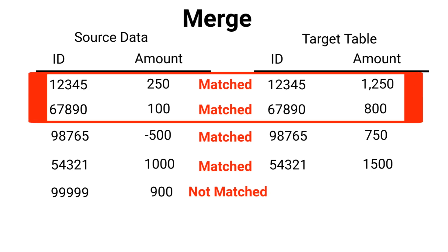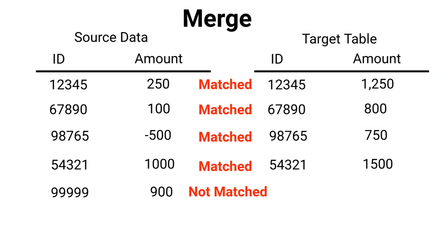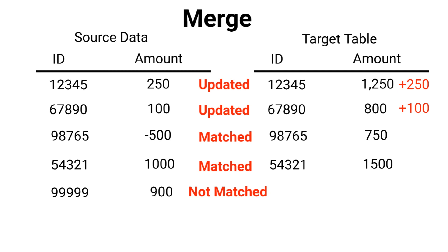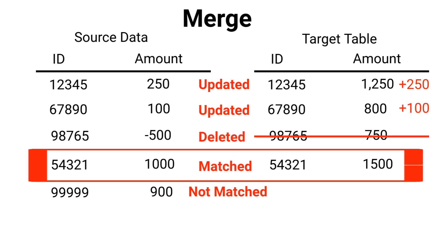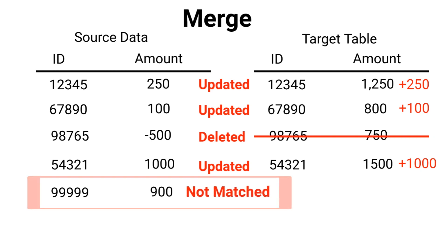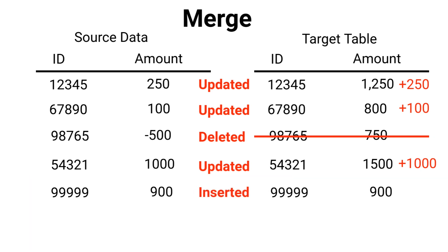Looking at the first two records, you can see we match on the ID, and we want to update our target table with the amount from our source data. Looking at the third record, we want to update the amount by a negative $500. If the amount falls below $500, we want to delete that record. The fourth record is another update. And looking at the last record, we do not have a match — there's no matching ID in our target table — so we want to insert this record into our target table. This is the basic idea behind merge. Now let's head over to SQL and see how this is done.